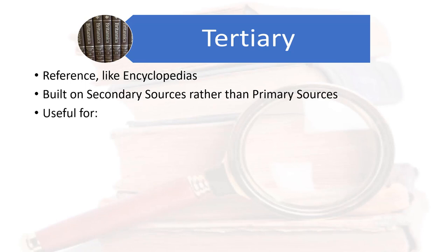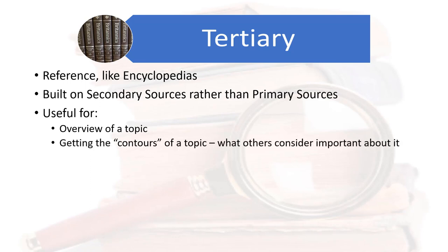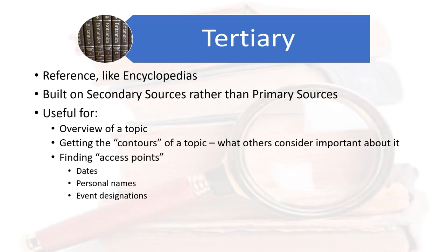So, a tertiary source synthesizes the interpretations from secondary sources to provide an overview of the topic it addresses, as well as the topic's contours — what secondary sources think is important for you to know about the topic. You come away from a tertiary source with a basic understanding of that topic, but even more importantly for research, you come away with access points like dates, personal names, and events.